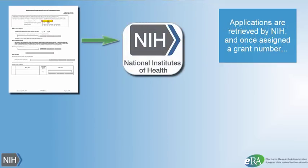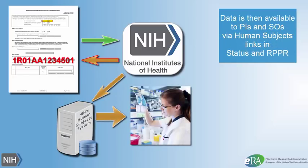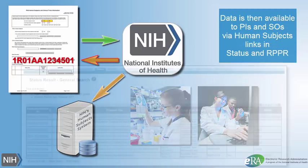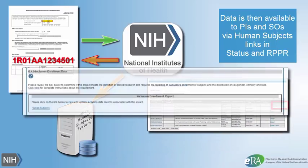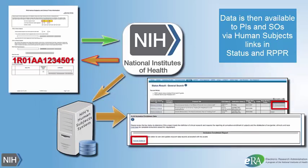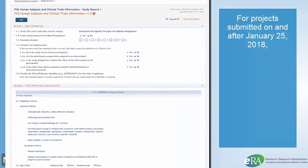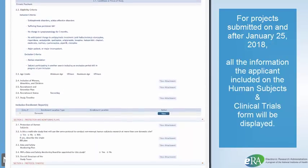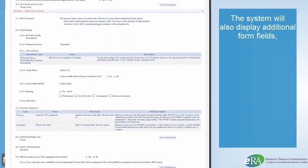The applications are retrieved by NIH, and once a grant number has been created, NIH automatically populates the human subjects system. This data is then made available to principal investigators and signing officials through a Human Subjects link on the ERA Commons status screen and the Research Performance Progress Report as of June 9, 2018. For projects submitted for due dates of January 25, 2018, and beyond, the system will display all the information the applicant included on the Human Subjects and Clinical Trials form.